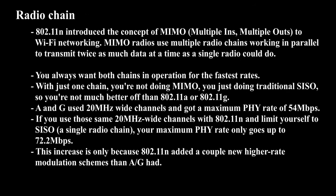That is, the same bandwidth and time slots. 802.11n introduced the concept of MIMO to Wi-Fi networking. MIMO radios use multiple radio chains working in parallel to transmit twice as much data at a time as a single radio could do. You always want both chains in operation for the fastest rates. With just one chain, you're not doing MIMO — you're just doing traditional SISO, so you're not much better off than 802.11a or 802.11g.